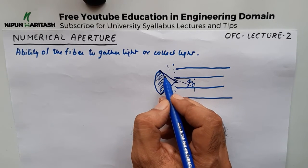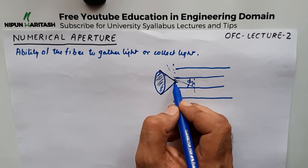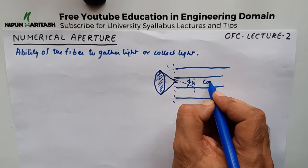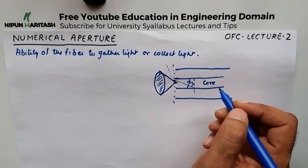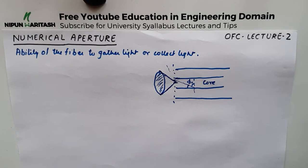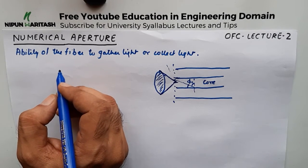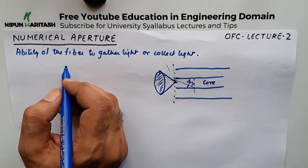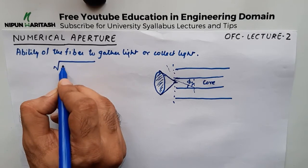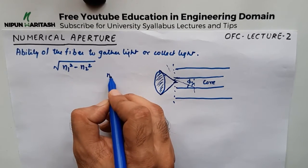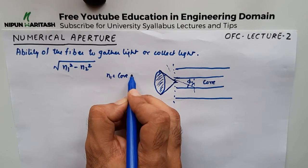If we send the light from outside this cone, it will make an angle that will not satisfy the critical angle condition. This area represents the region from where light can get into the fiber or into the core. The ability of the core to absorb light from within this area is known as numerical aperture. Simply put, the formula for numerical aperture is the square root of n1 squared minus n2 squared, where n1 is the core refractive index.